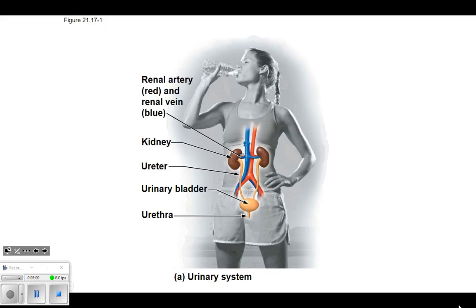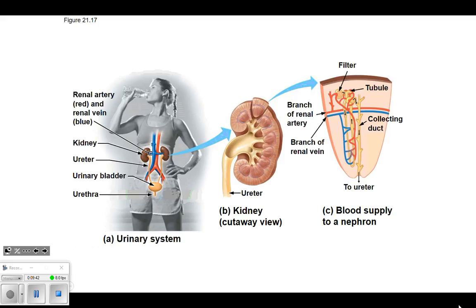Connecting those together - the circulatory system, because blood has to get to the kidneys somehow for your kidneys to filter it. So the circulatory system is directly connected to your kidneys. There are lots of diagrams in this one, so if it helps when you're studying, you can go back to D2L and look through them. They're more clear than your textbook.